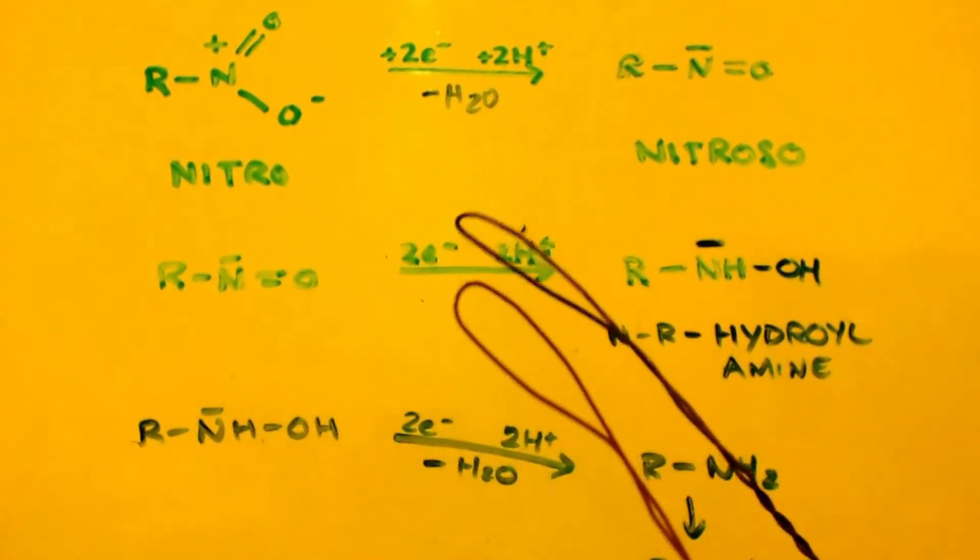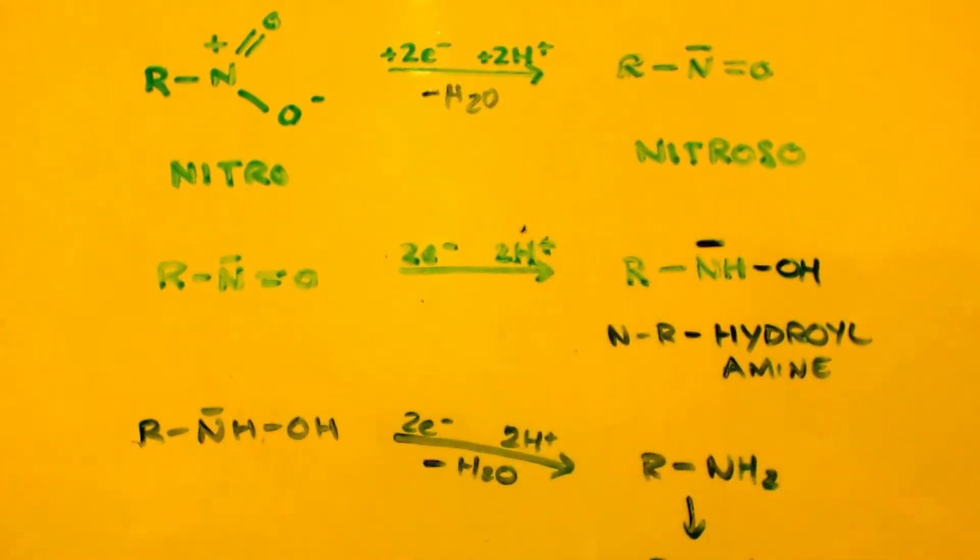Then you take that and you do the same thing again. You add two electrons and two protons. Only this time you're not making any water. And you make this N-substituted hydroxyl amine.